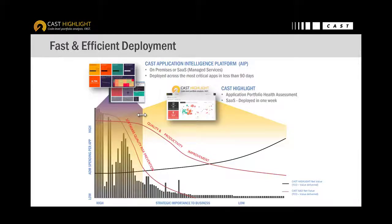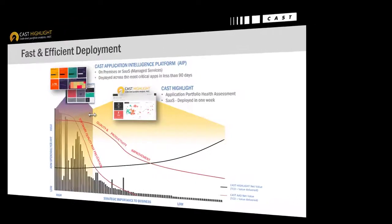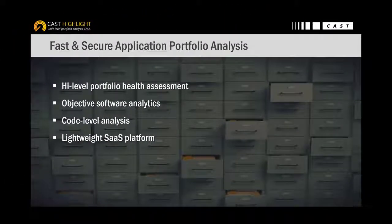That's where we transition to AIP. The Application Intelligence Platform enables in-depth investigation at both code and system levels. Although these two solutions can work independently, you'll get the best value of CAST expertise by combining CAST Highlight as your continuous application portfolio analysis, and AIP to enable investigation, modernization, as well as remediation to ultimately improve software and architecture.